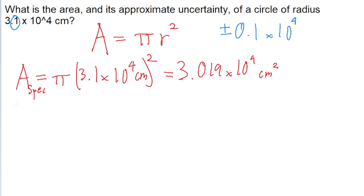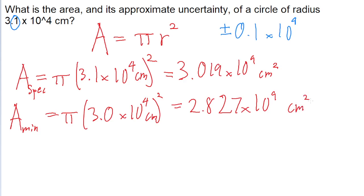So for the minimum possible area, we'll use the exact same area formula and almost the same radius, except instead of 3.1 times 10 to the power of 4, we'll use 3.0 because now we've lowered the radius by 1 unit. So this gives us an area of 2.827 times 10 to the power of 9 squared centimeters.